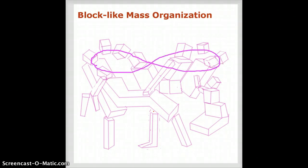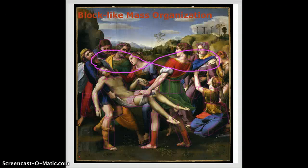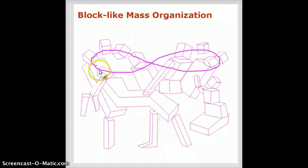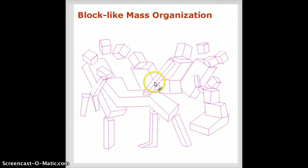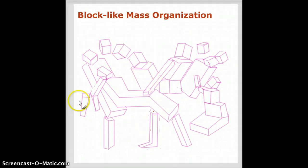So there's a structural arc — another layer to the composition that he's finding within the diagonals, within the verticals, within the horizontals, and within all the structure of the figures.